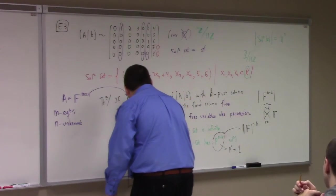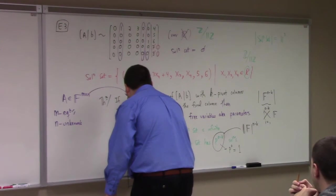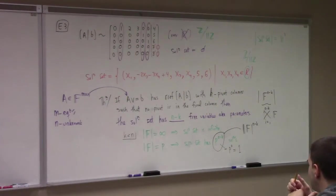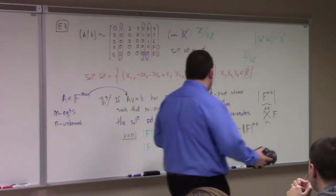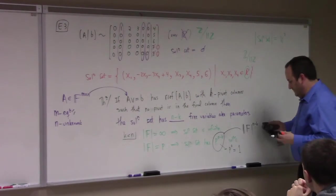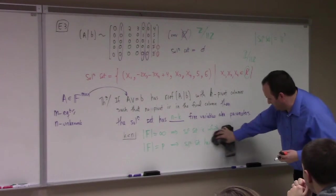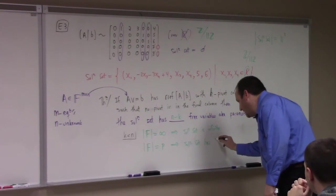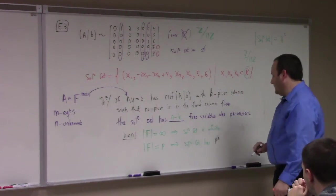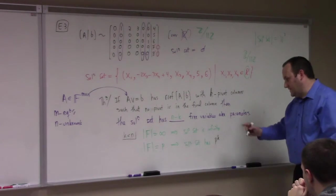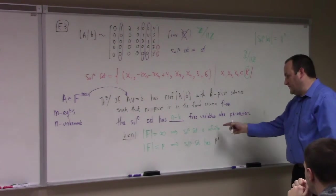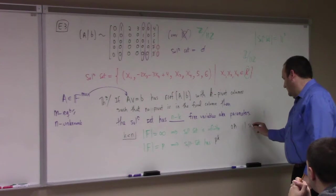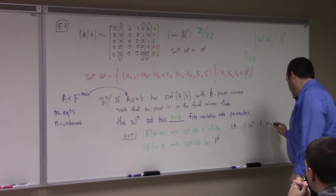I see the problem — I was supposing that K is less than N here. Let me remove that and write once more: if the size of the field is p, the solution set has p to the N minus K solutions. In the case of an infinite field, we either have an infinite solution set if we have less than N pivot columns, or we have one solution if N equals K.